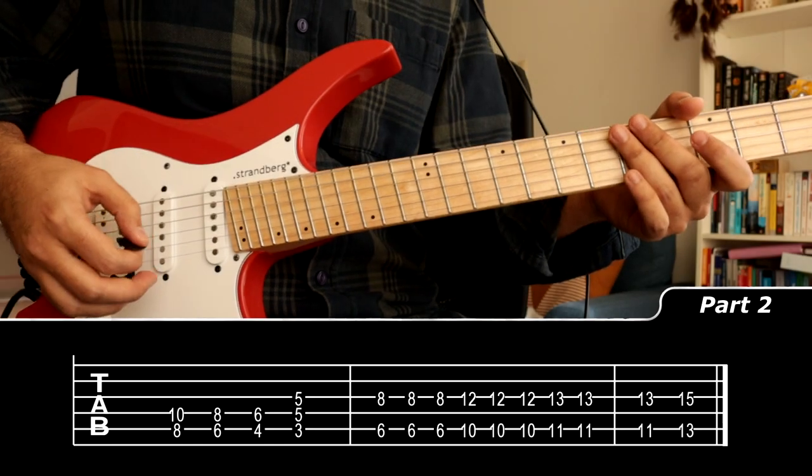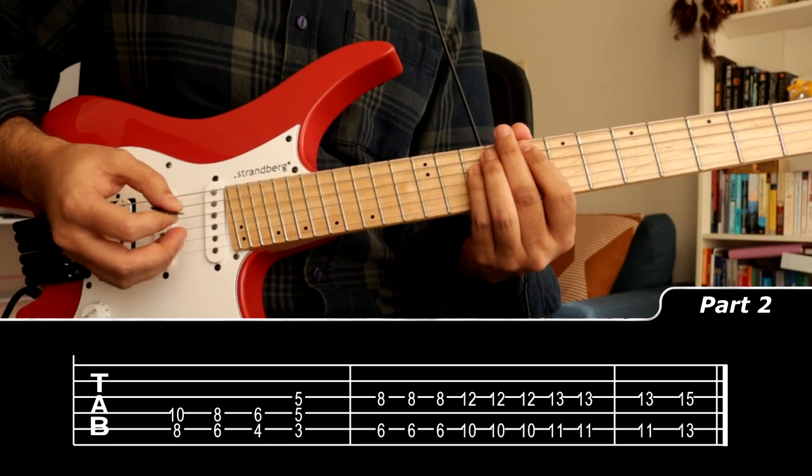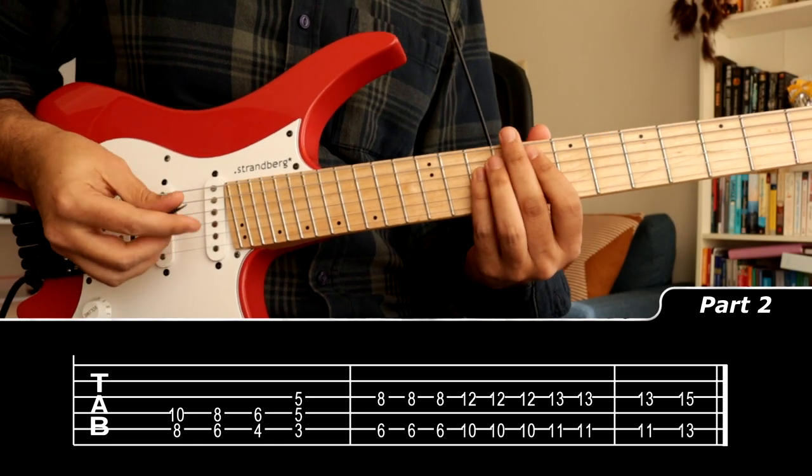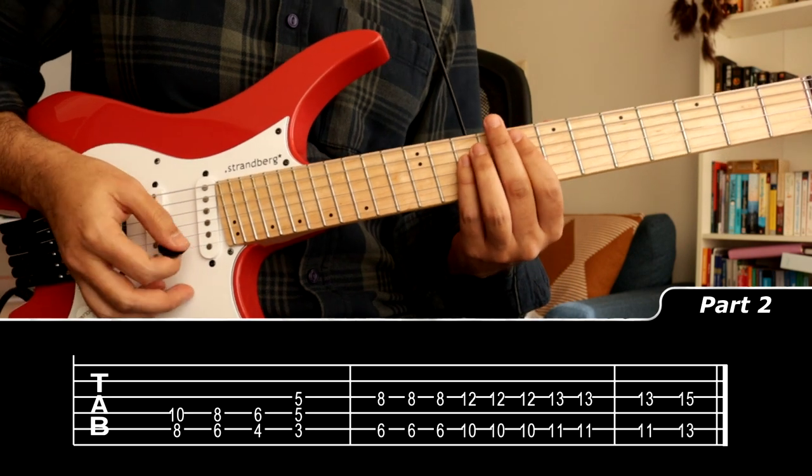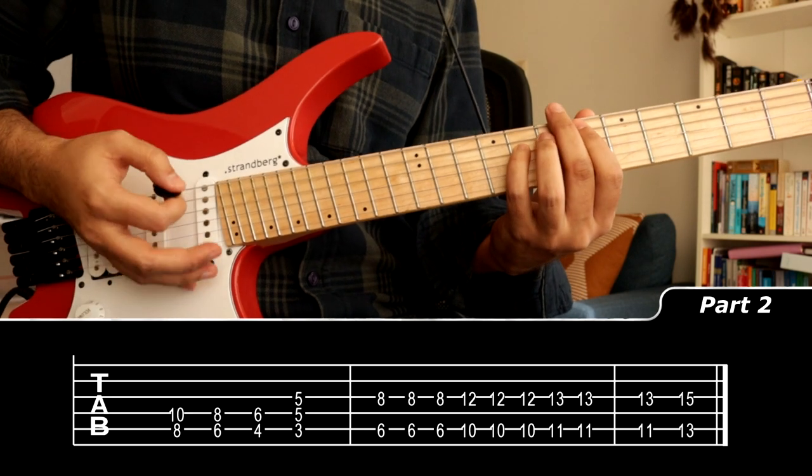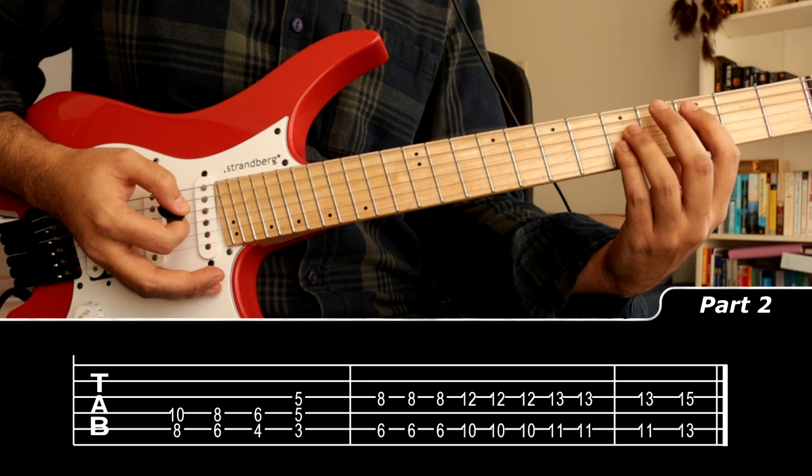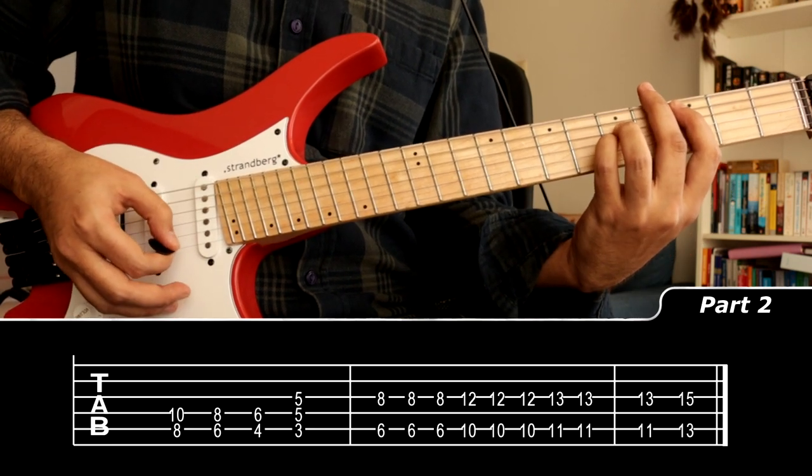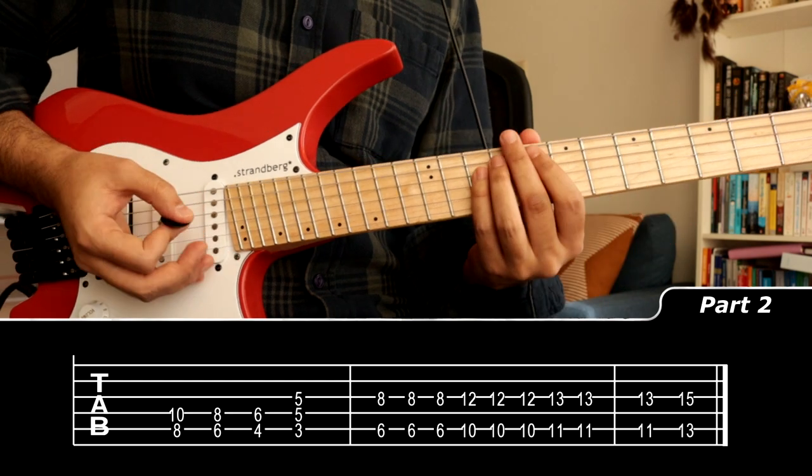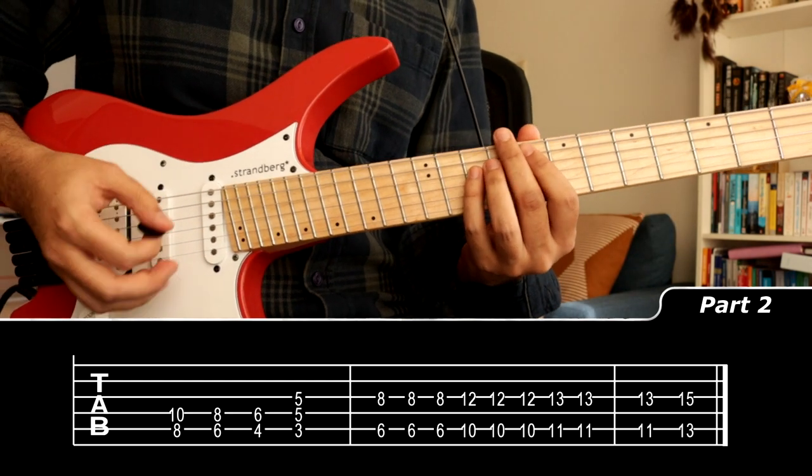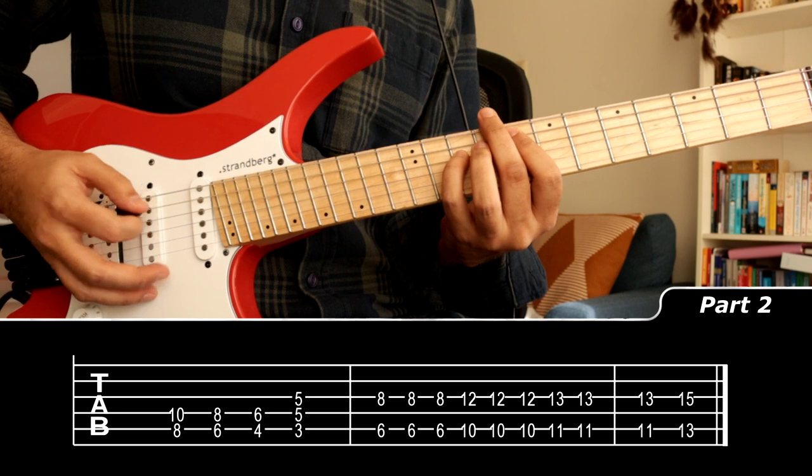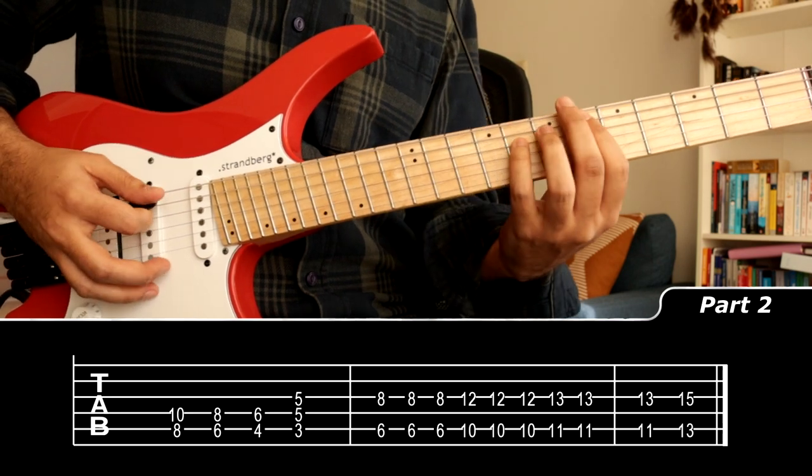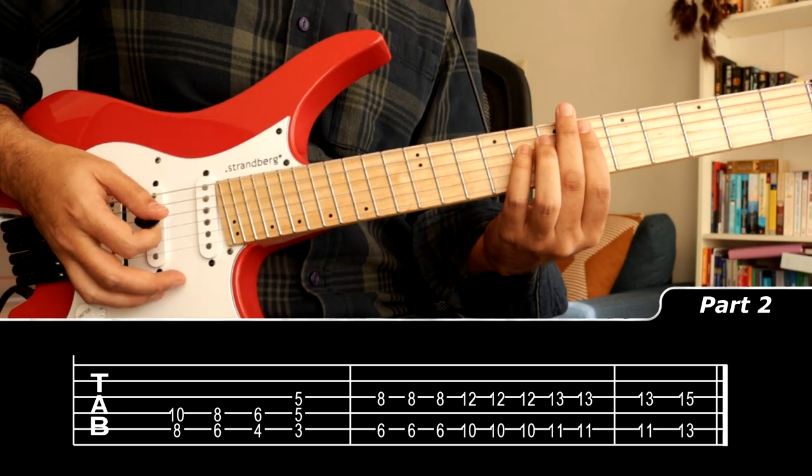We move into the verse riff, which is pretty simple, just power chords on the A string and D string. We have 8-10, 6-8, 4-6, and then pre-chorus 5-3. And from there you just kind of play around with it. You can either palm mute it all the way, downstrokes, you can play around with it.